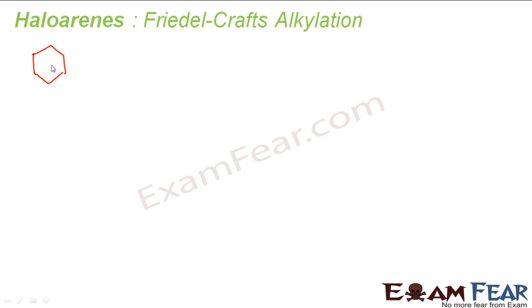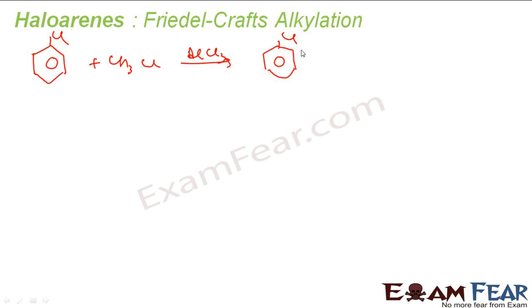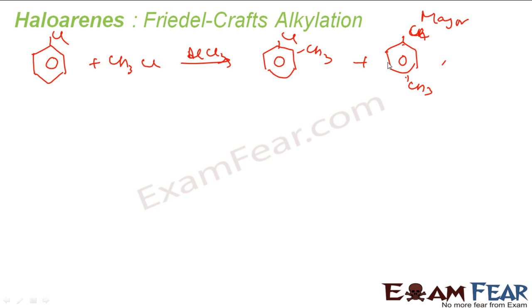In Friedel-Crafts alkylation reaction, we again take a halo arene. In this case I took chlorobenzene. We react it with CH3Cl, and again we use AlCl3 to make a better electrophile. What you get is CH3 added at the ortho and para positions. The major product is 1-chloro-4-methylbenzene.